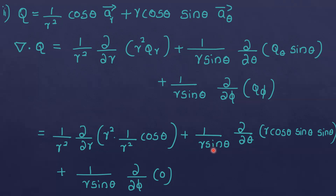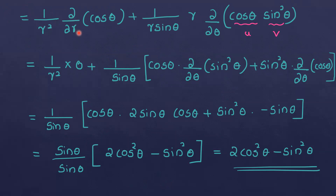Substituting the components: 1 by r squared dou by dou r of cosθ — since Qr equals 1 by r squared cosθ — plus 1 by r sinθ dou by dou θ of r cosθ sinθ into sinθ. For the φ component, it is zero. The derivative of the constant with respect to φ is 0, giving a zero contribution. Plus 1 by r sinθ dou by dou φ of 0.